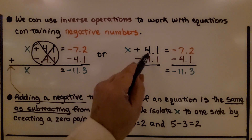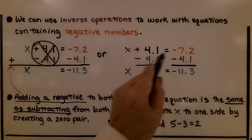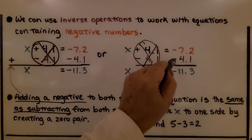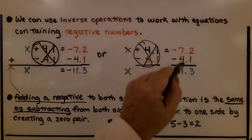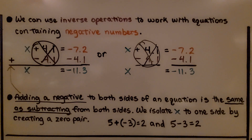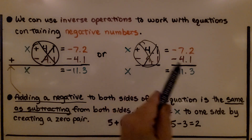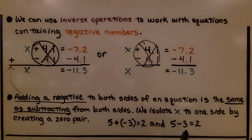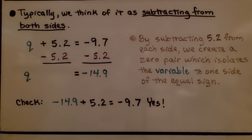We can also look at it as just subtracting four and one-tenth from each side. We take it away — we're left with x, and when we take negative four point one from negative seven point two, we get negative eleven point three, just like before. Remember that adding a negative to both sides of an equation is the same as subtracting from both sides. We isolate x to one side by creating a zero pair. So if we have five plus a negative three, that's equal to two — and five minus three is equal to two. We're adding a negative three instead of taking away a positive three, but typically we think of it as subtracting from both sides.